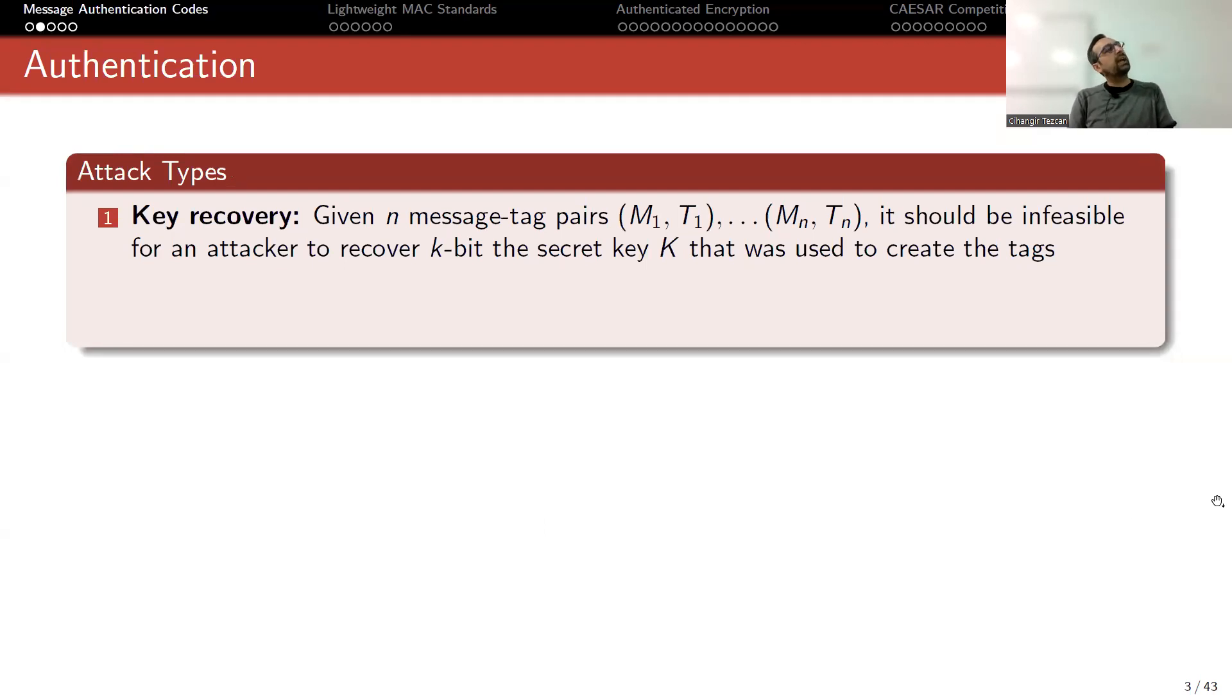Let's see what kind of attacks we can have. Since there's a secret key involved, the attacker would like to capture the secret key. You listen to the communication and you capture a lot of messages with their tags. If your message authentication code is good, it should be infeasible for an attacker to recover the secret key K that was used to create these tags. Similar to block ciphers, but here there is no encryption. Instead, we produce a small tag like a hash function output. But don't forget that hash functions don't use a secret key. Here we are using a key. This is why sometimes people refer to message authentication codes as hash functions with a secret key.